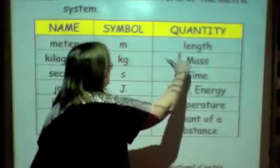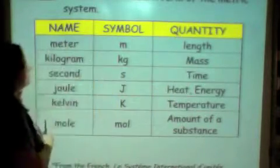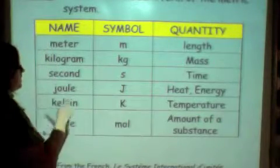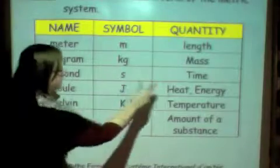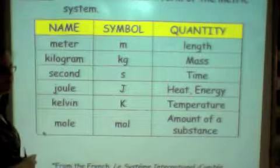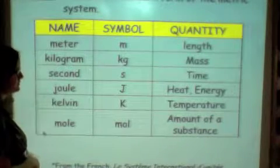So, for instance, typically length is measured in meters. Mass, which is how much something weighs, is going to be kilograms. Time is second. Heat and energy is joules. You're more familiar with the calorie. The joules is what's used.